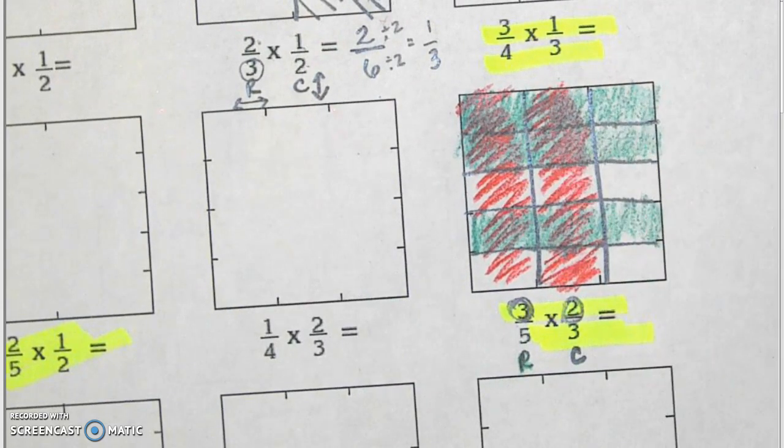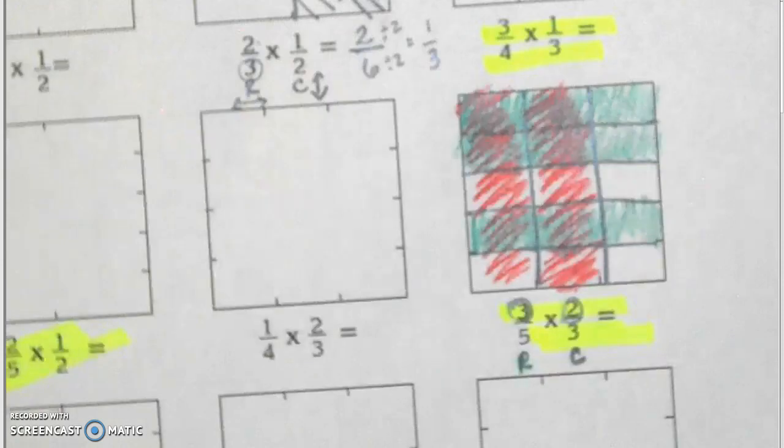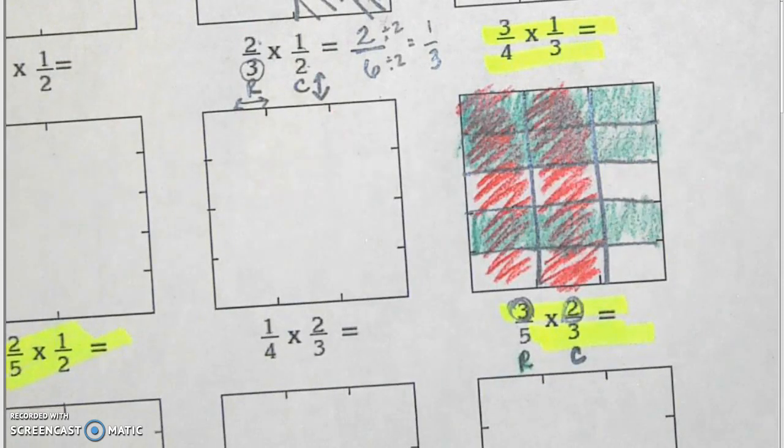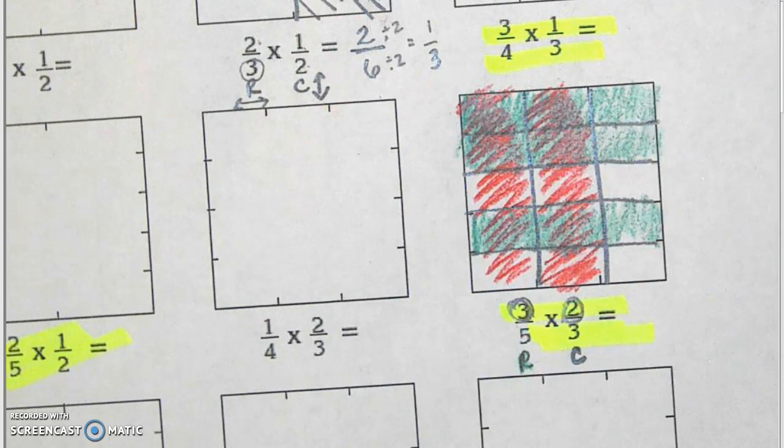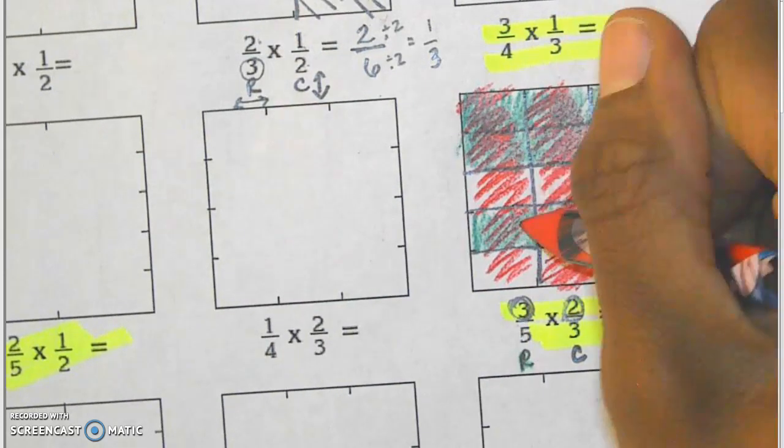And again, remember, we're looking for the boxes where there is the overlap. So I'm looking for overlap boxes. Let's see if I can adjust that a little bit. I'm looking for boxes where I have the green and the red. I see one, two, three, four, five, six.